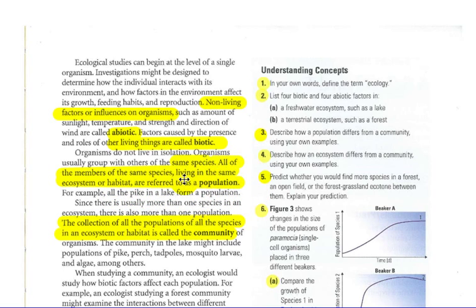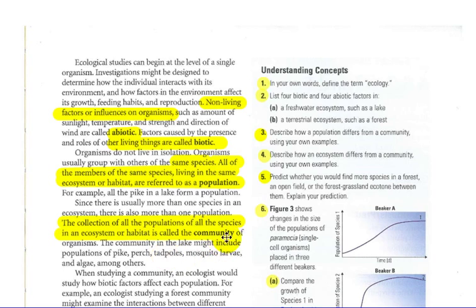We could have a human population, which would be all of the humans on the planet. I'm going through this assignment quickly, highlighting things — you should likely highlight the same things because it will help you with the assignment. For example, the pike in the lake form a population. Since there is more than one type of species in an area, there is also more than one population. The collection of all populations — all the fish, birds, etc. — living in an area would be considered a community of organisms, consisting of all the different populations involved.